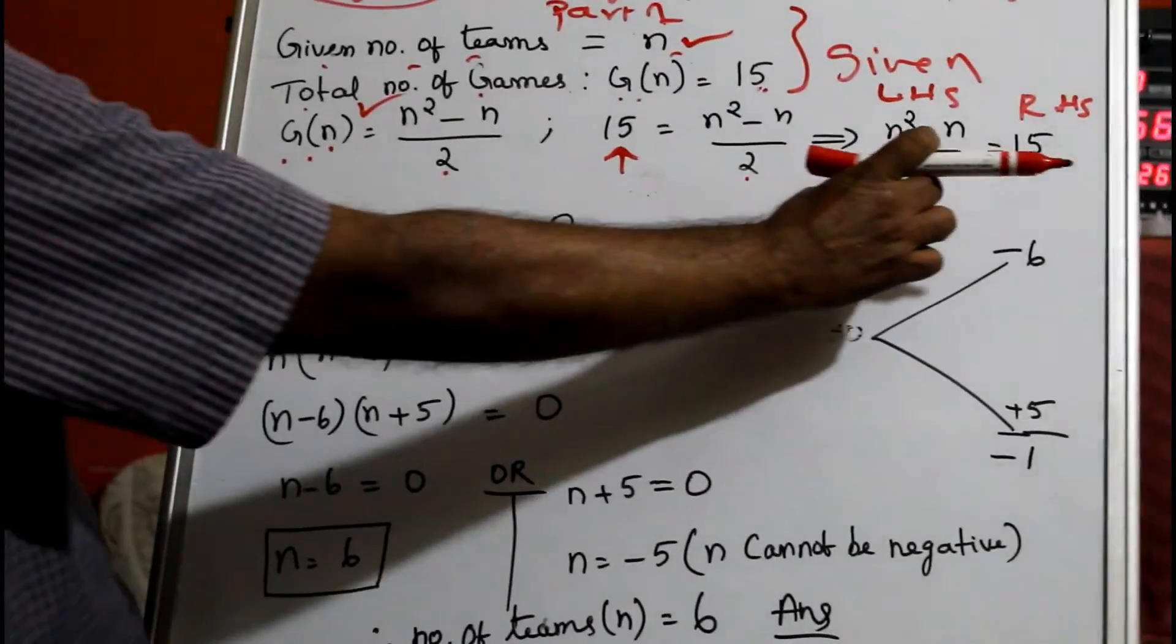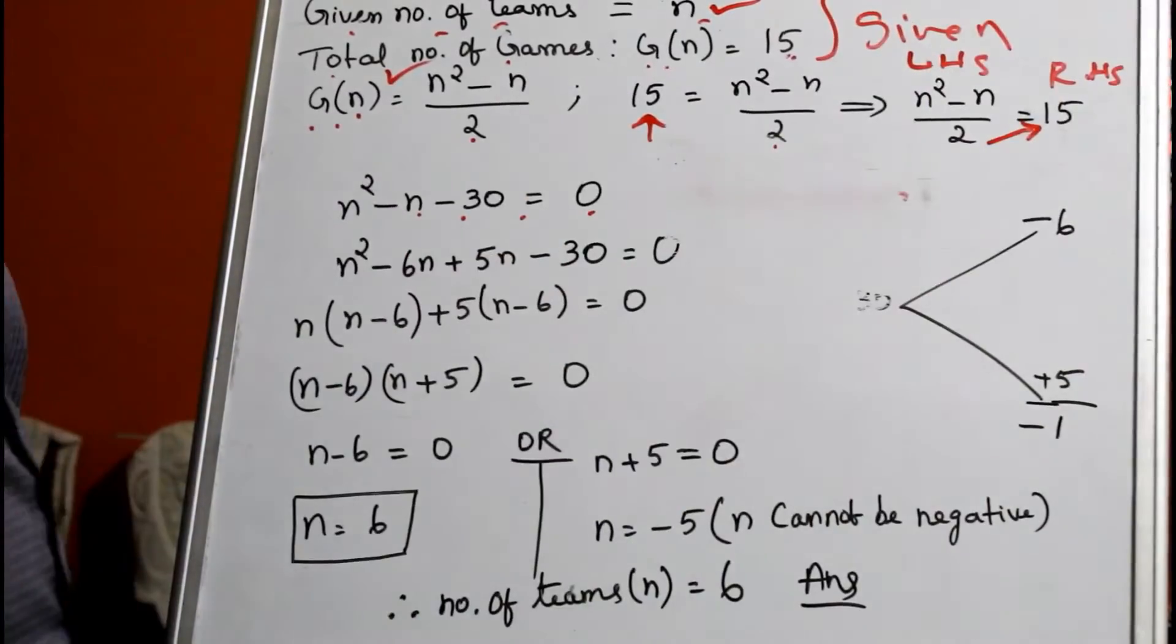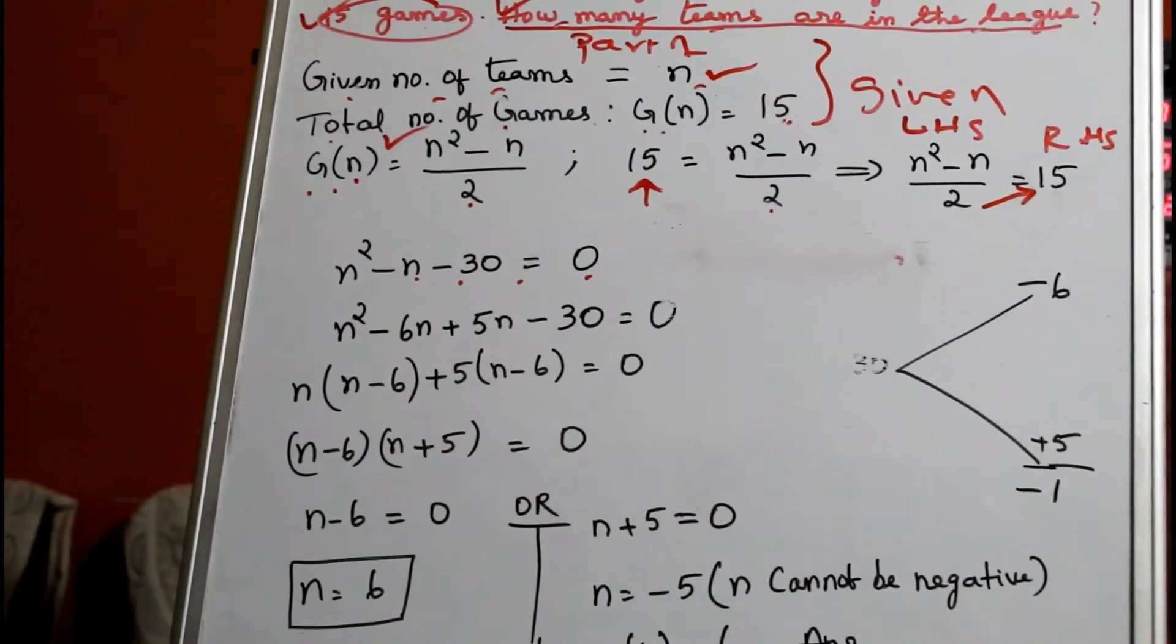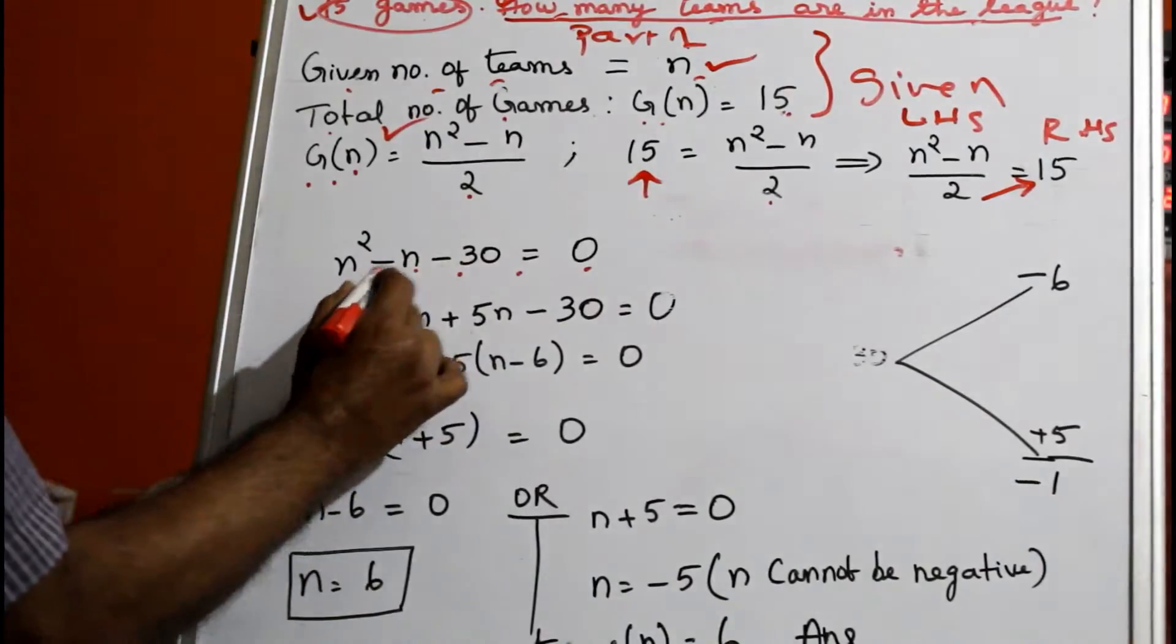I told you, unknown letters are kept on the left-hand side and numbers on the right-hand side, whether it's simultaneous, quadratic, or linear. Then this 2 will multiply, so you get n² - n - 30.